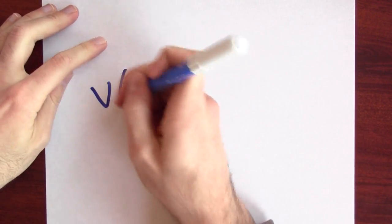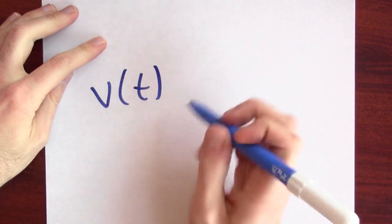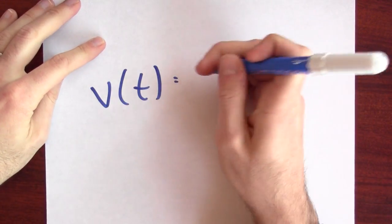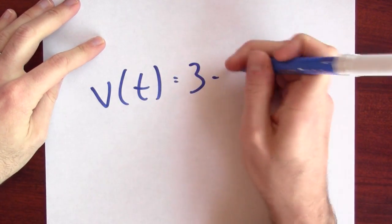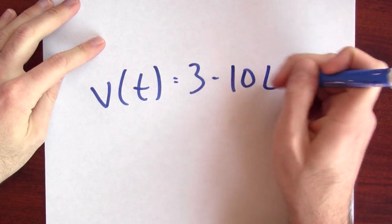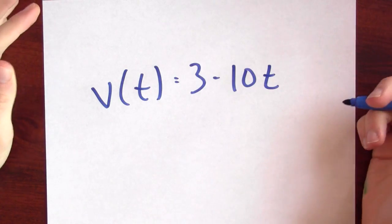Let's suppose that I have a formula for my velocity. For instance, maybe my velocity at time t is something like 3 minus 10 times t. With that equation at hand, can I then determine my position? Velocity and position are related in some way.